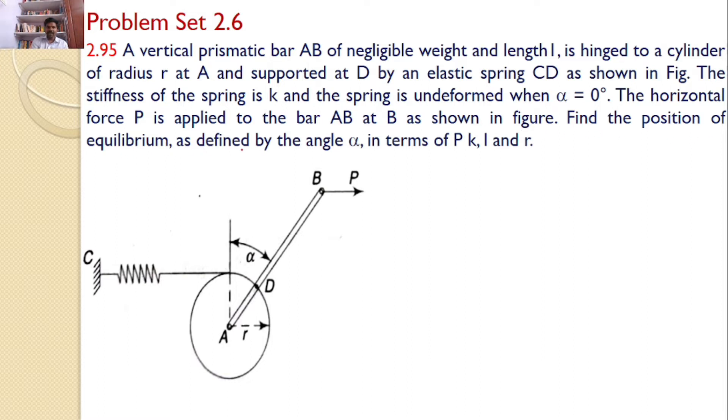Find the position of equilibrium as defined by the angle alpha in terms of P, K, L and R. That means there is a cylinder and a prismatic bar AB is attached like this. A spring is also connected like this.